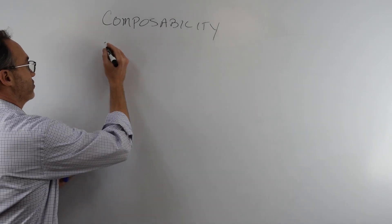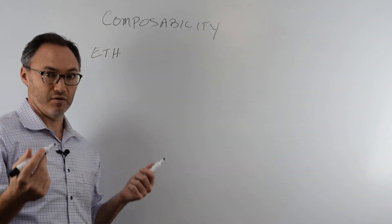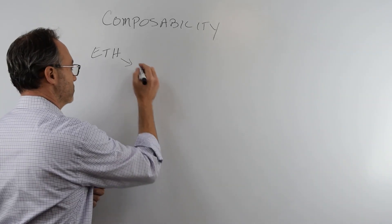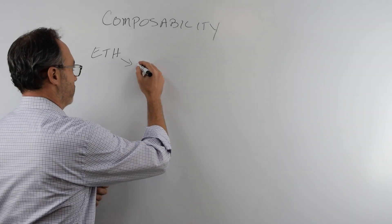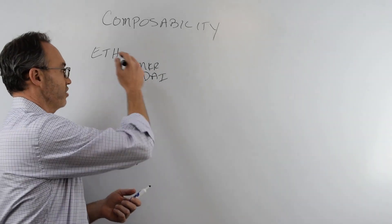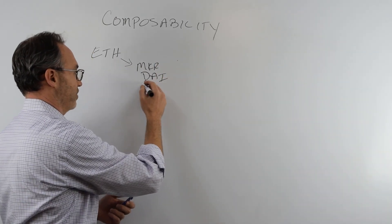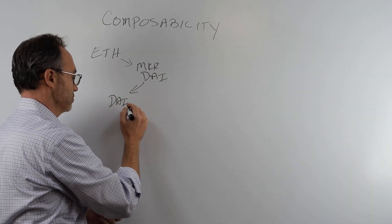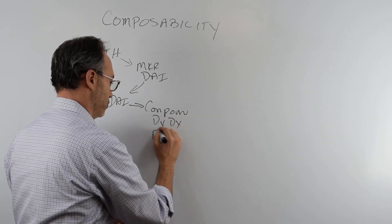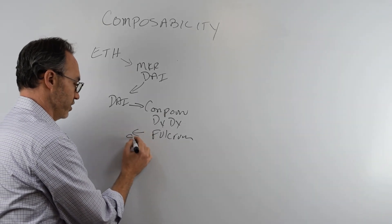If you want to get down to it, we started with Ethereum — ETH. I could buy ETH on an exchange like Coinbase and just hold it there. Then the folks at Maker created DAI. On top of my ETH, I can collateralize it and get DAI out. I can then take that DAI and put it into a Compound, DYDX, or Fulcrum loan and actually earn money — I can earn interest on this.